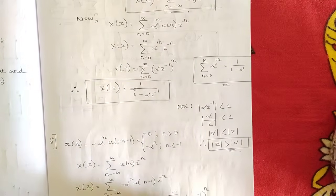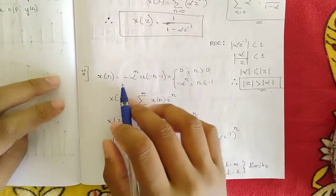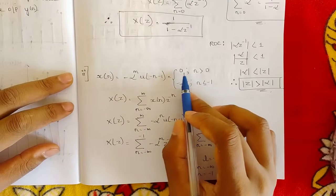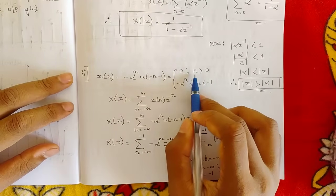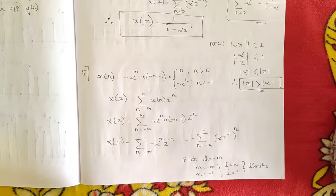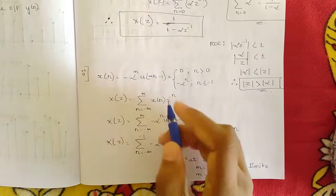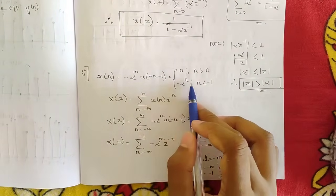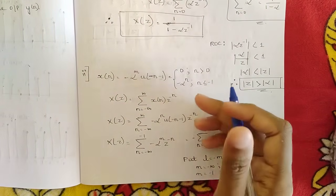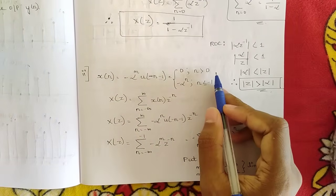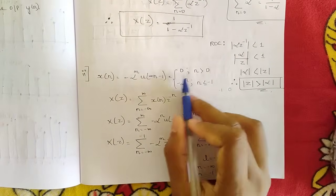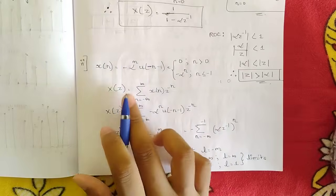The second sub-question: x[n] = −α^n · u[−n−1]. The signal is zero for all n greater than zero, and equals −α^n for n less than or equal to −1, because the unit step u[−n−1] causes a left shift by one, giving non-zero values only for n ≤ −1. Apply the Z transform formula and substitute x[n].